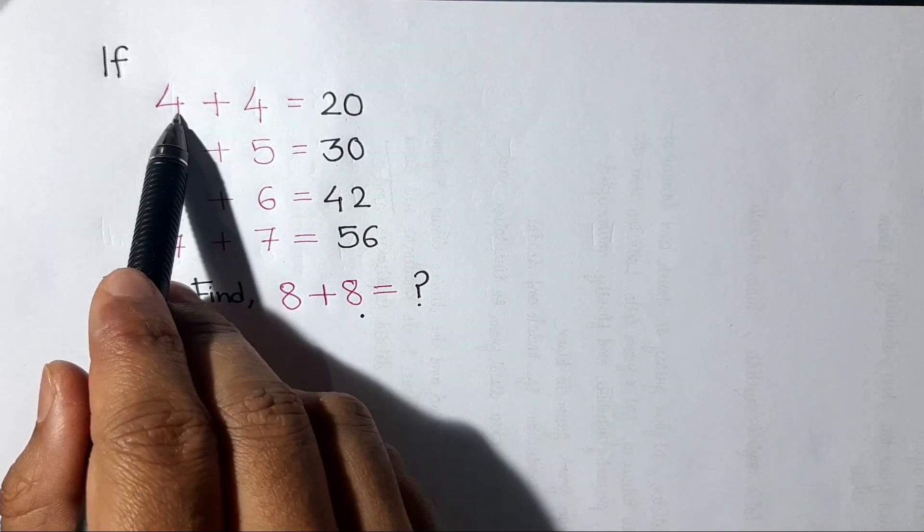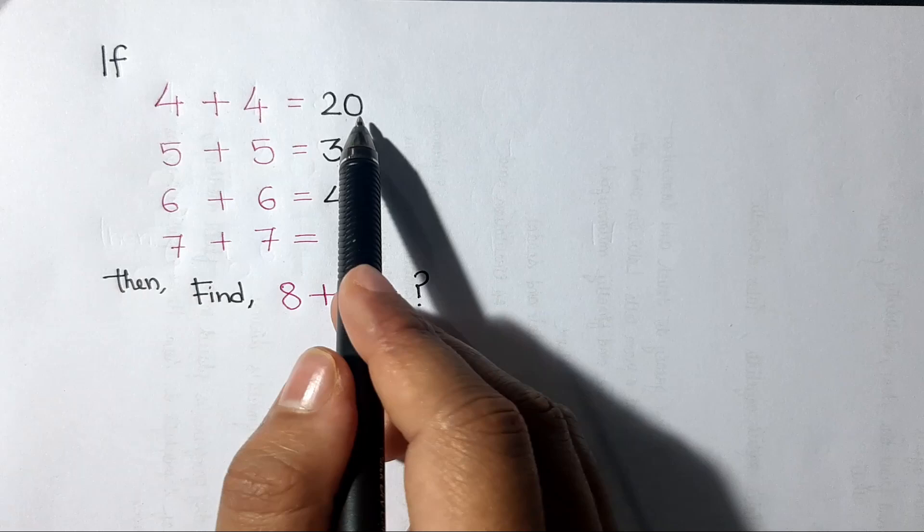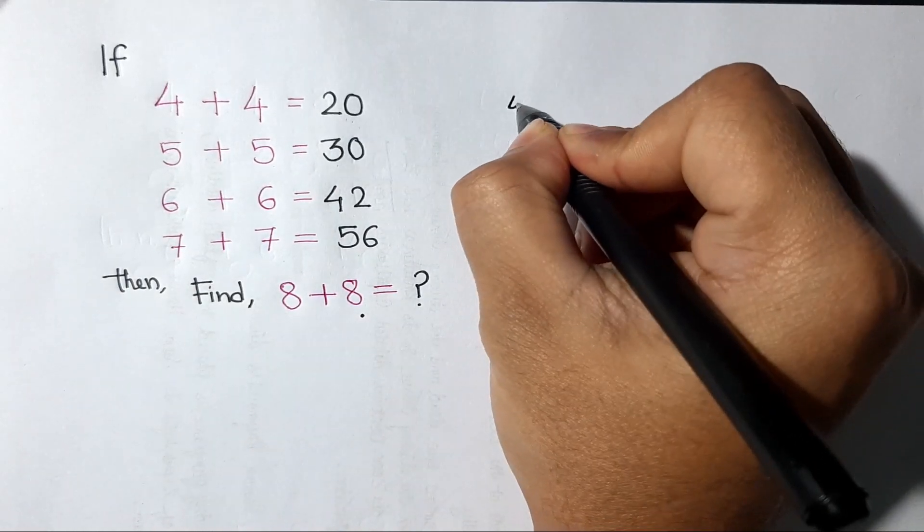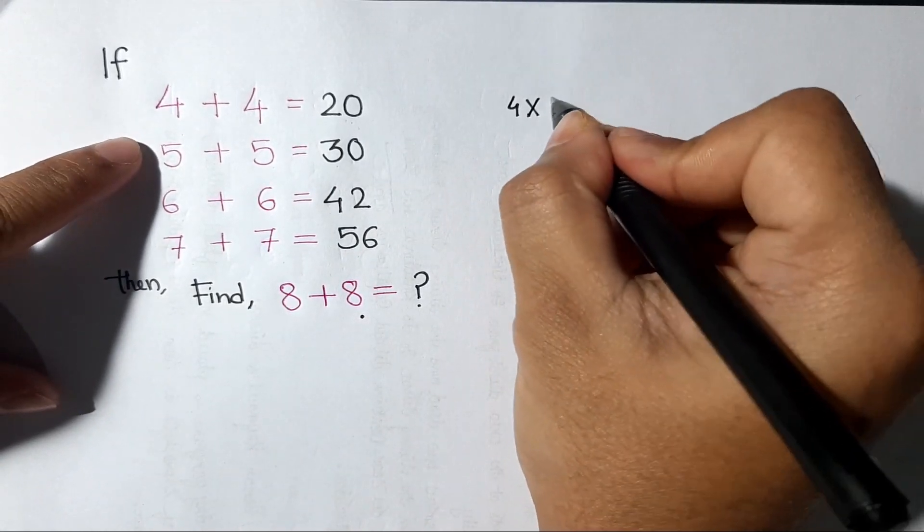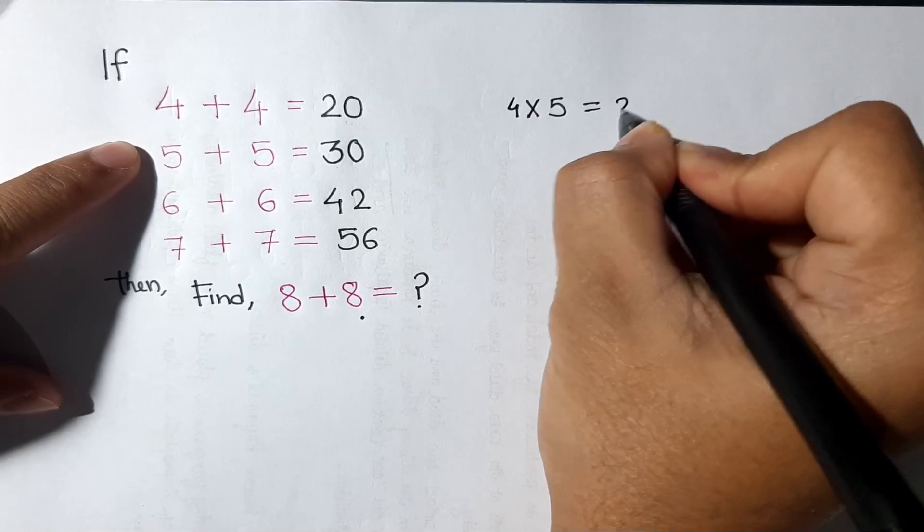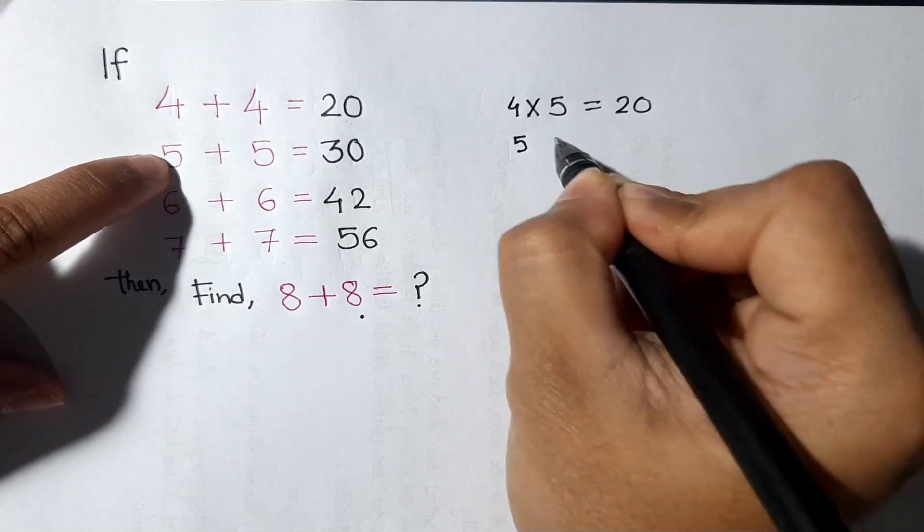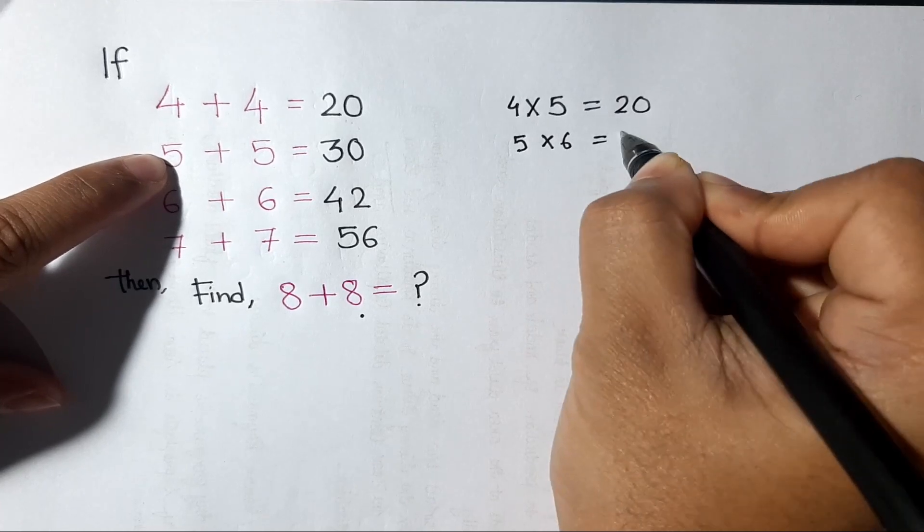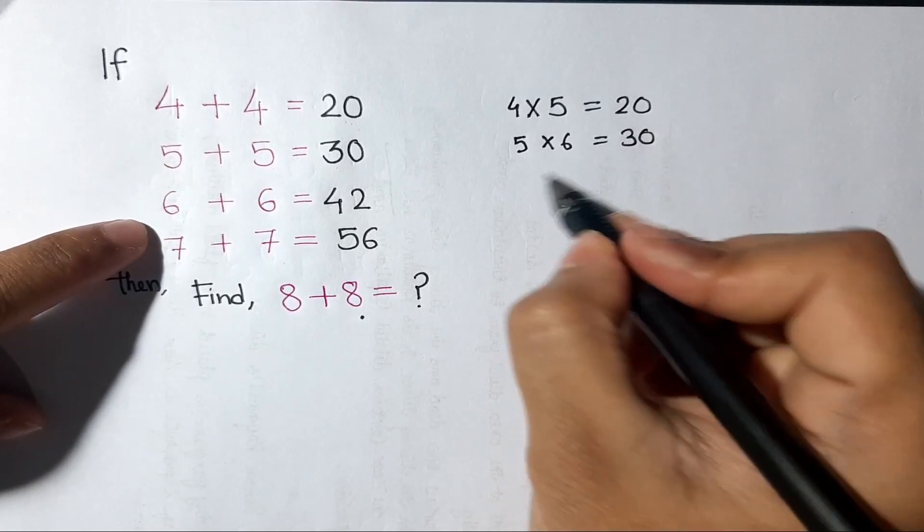You need to find out 8 plus 8. If we multiply 4 with 5, we will get 20. Similarly, if we multiply 5 with 6, we will get 30. If we multiply 6 with 7, we will get 42.